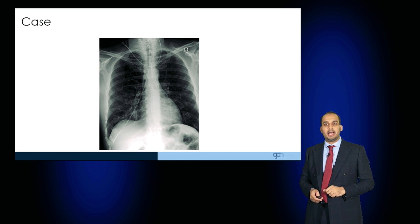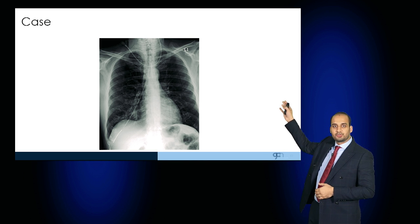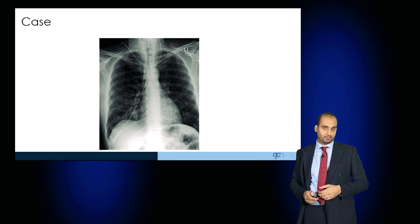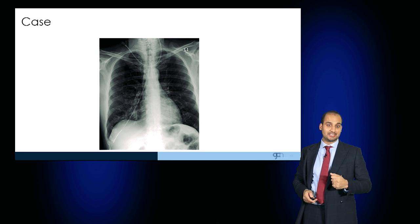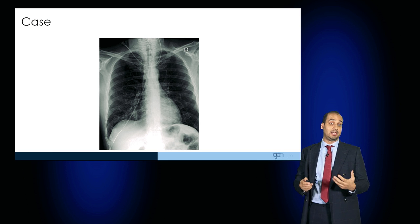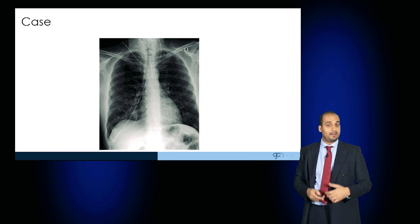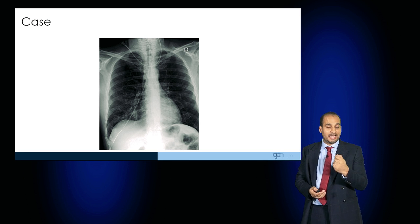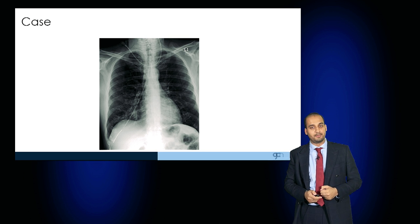Here is an incorrect NG tube placement — you can see that the NG tube tracks straight into the right main bronchus. That should not be used and should be removed immediately. Most likely it would be causing the patient a lot of discomfort and coughing. But you might have a sedated patient where you can't detect those clinical signs, and that's why the radiograph is very important.